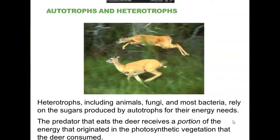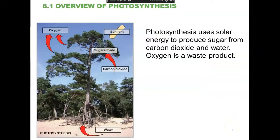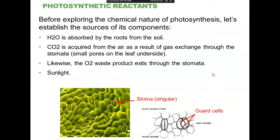At its simplest, photosynthesis is using sunlight as a power source to push the combination of carbon dioxide and the hydrogens of water to form carbohydrates. Oxygen is released as a waste product — it's not necessary in the synthetic pathway, it's a byproduct.